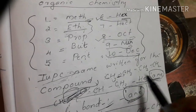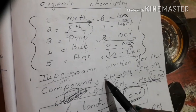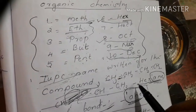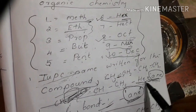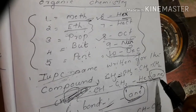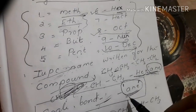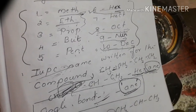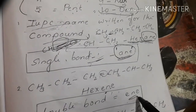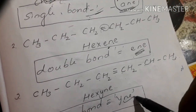If you use carbon with a single bond, the suffix is 'ane'. We also use double bond — the suffix for double bond is 'ene'. Triple bond suffix is 'yne'.